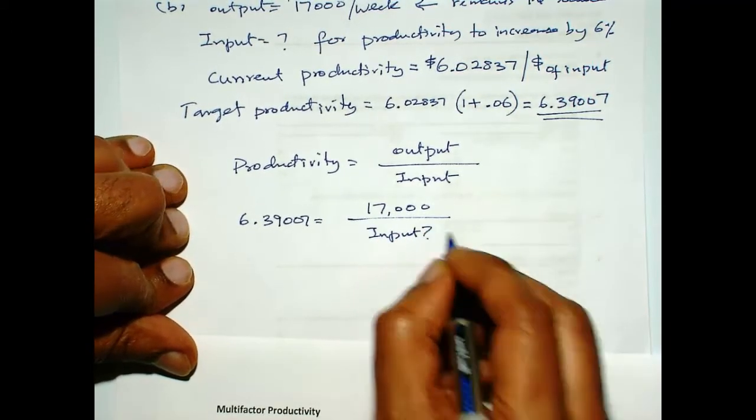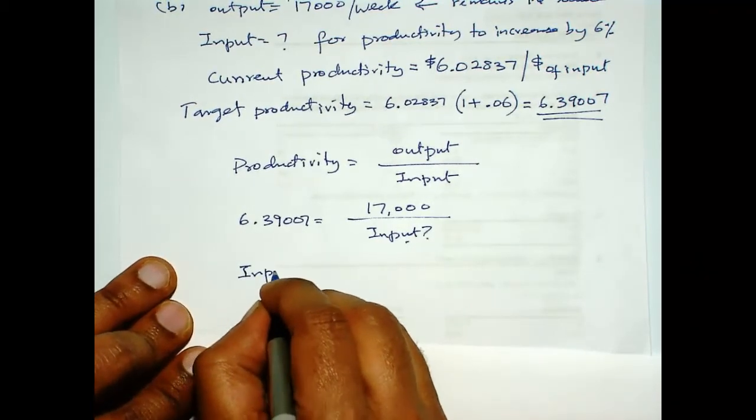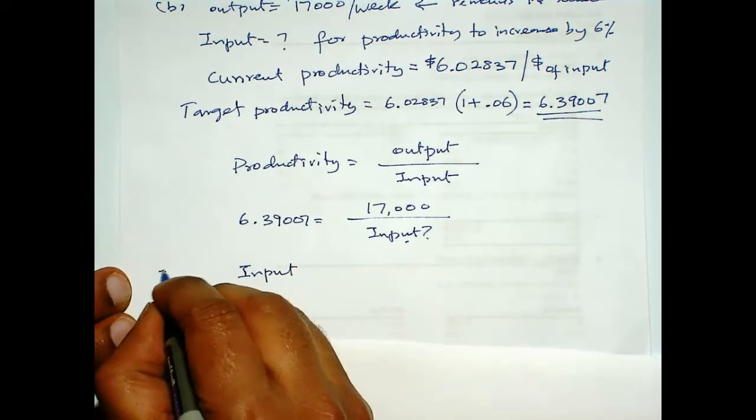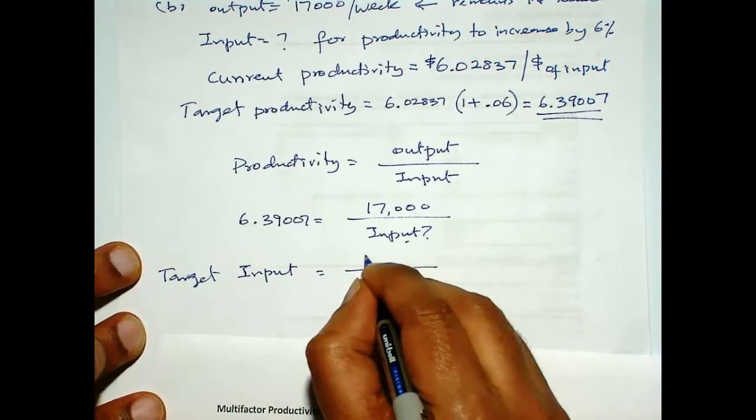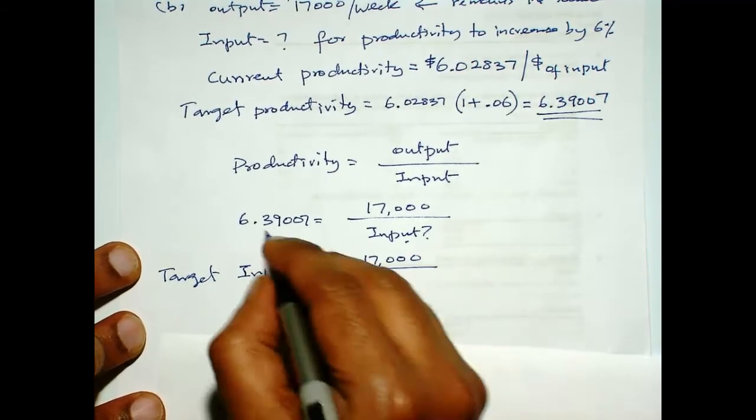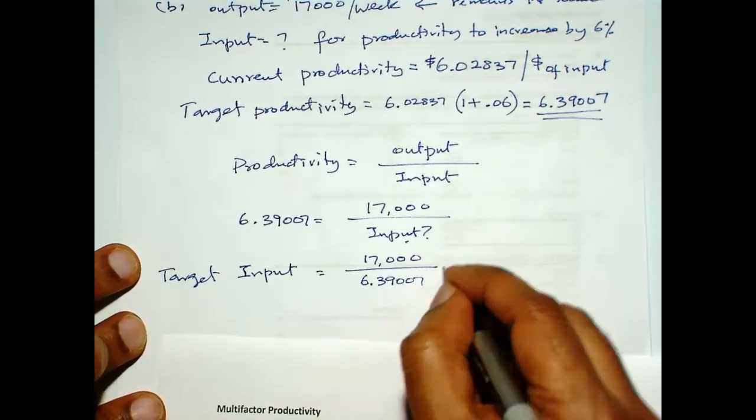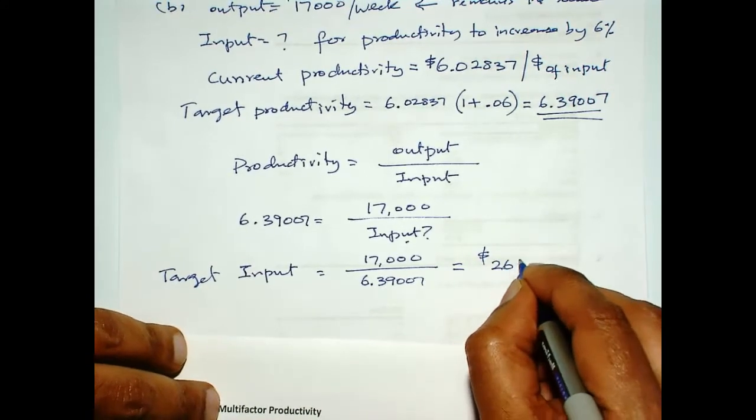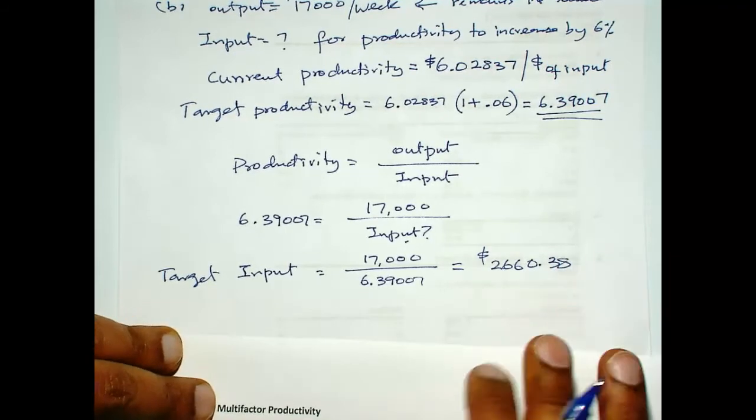Now, we switch these two and we get input, let us call that target input is $17,000 divided by 6.39007, and that is $2660.38.